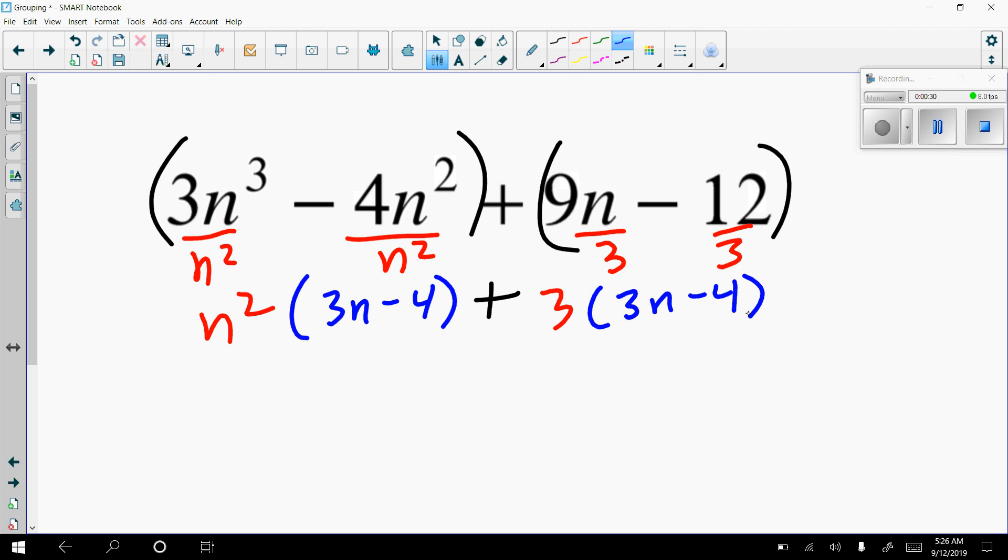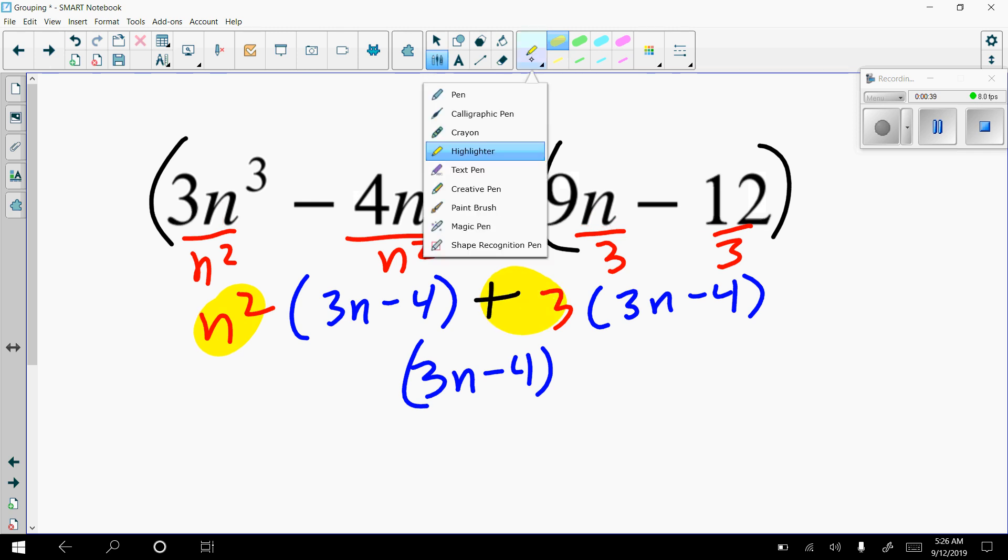I've got the matching 3n minus 4, so I'm going to take that out as a GCF right at once. And the stuff that I had out here in the front, they create the second set of parentheses. So I'm going to have n squared plus 3.